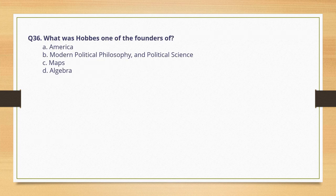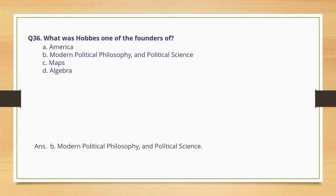What was Hobbes' one of the fondest options? Options are given. The correct option is option B: modern political philosophy and political science.